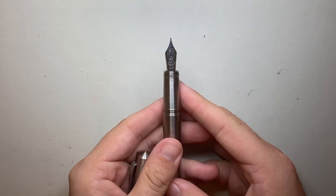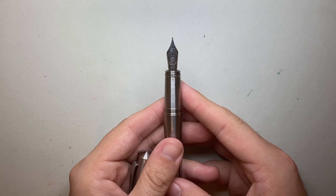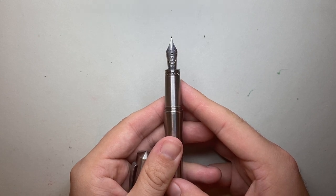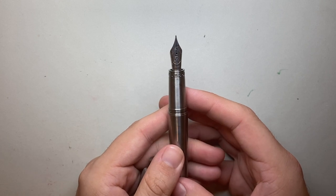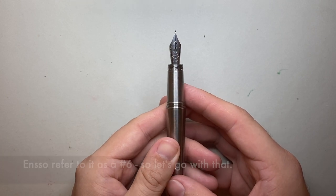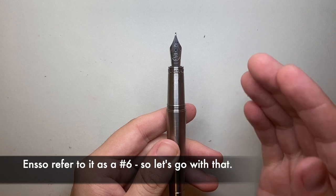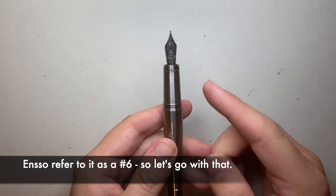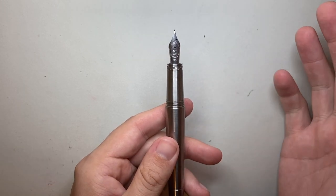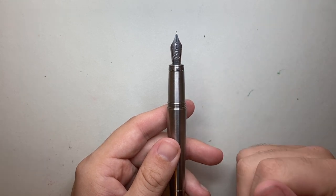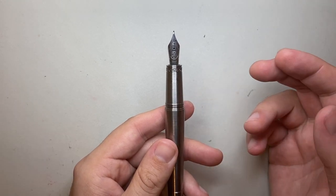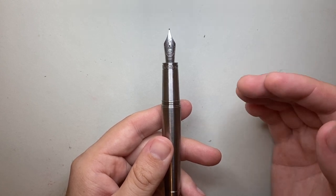I've heard this nib referred to both as a number six and a number five. In my measurement, it looks like a number six. I haven't replaced a nib on this because I'd like to review the nib that comes on it, but it is a Bock nib, so if you are wanting to expand your nib horizons on this pen, it is possible.